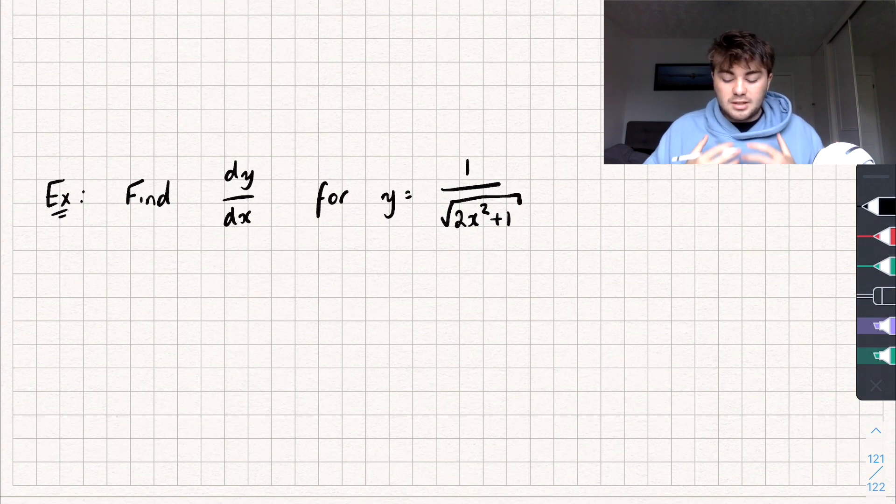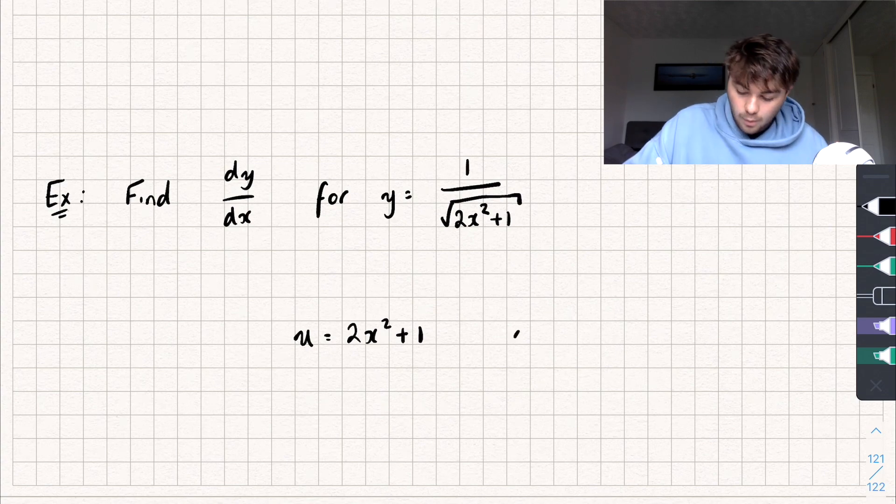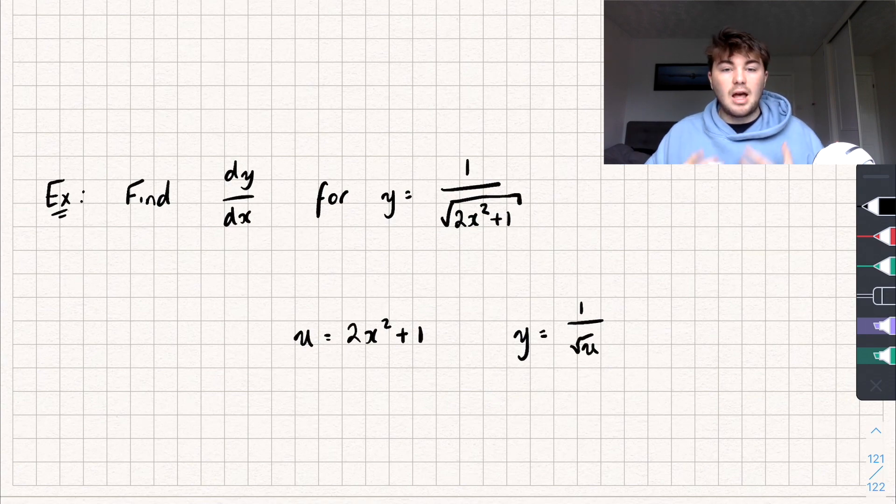In this example here, we're going to say let u equal the 2x squared plus 1. So, u is going to equal 2x squared plus 1, because if I do that, y is going to be equal to 1 over the square root of u. And they're both quite nice things to each differentiate.